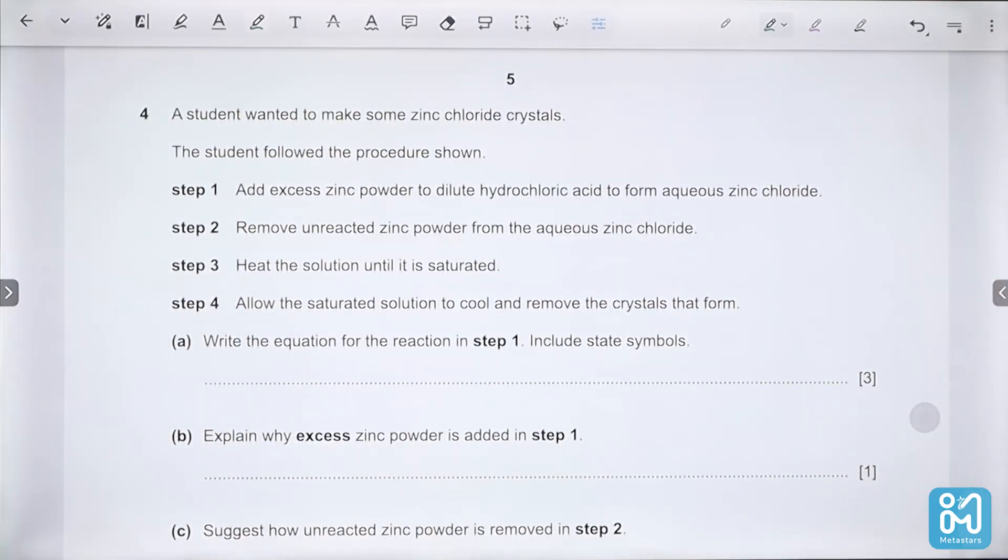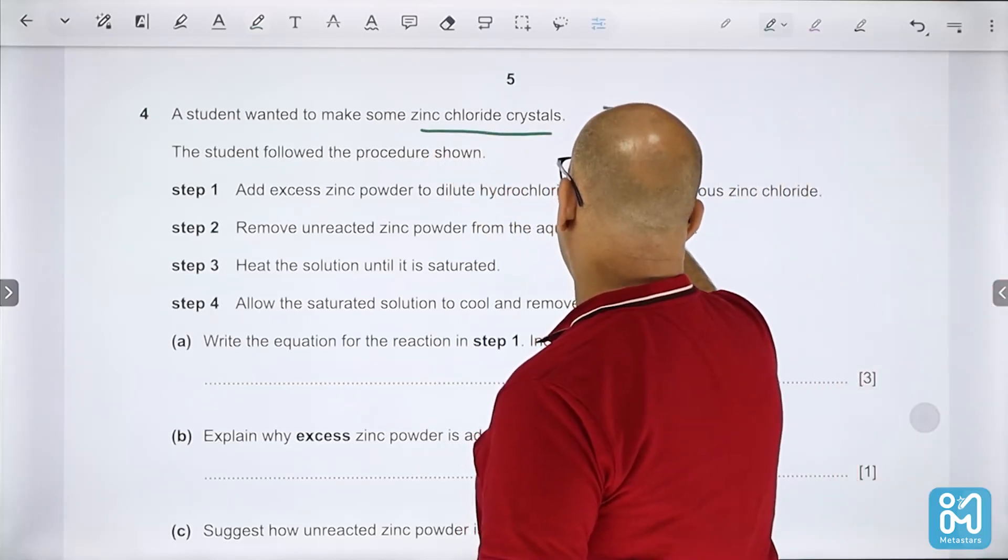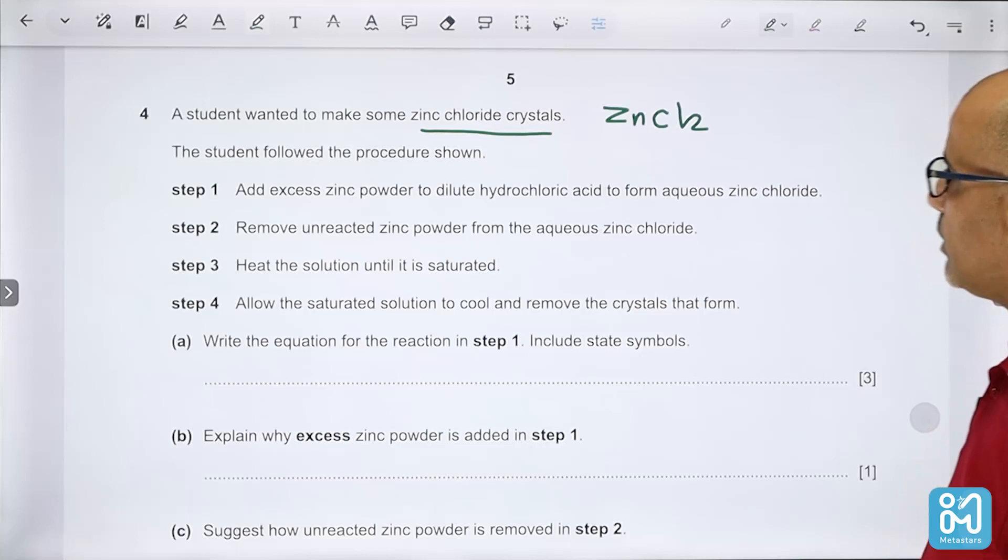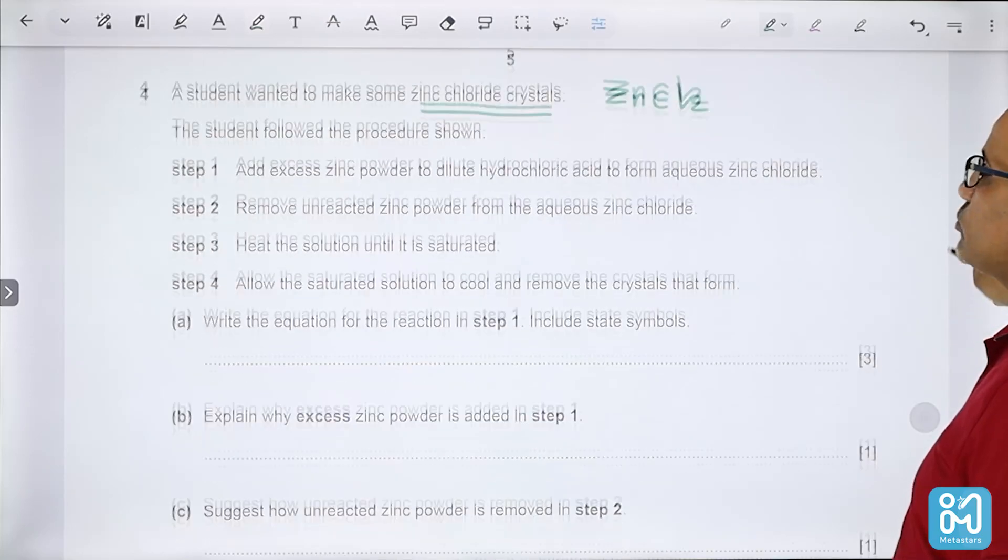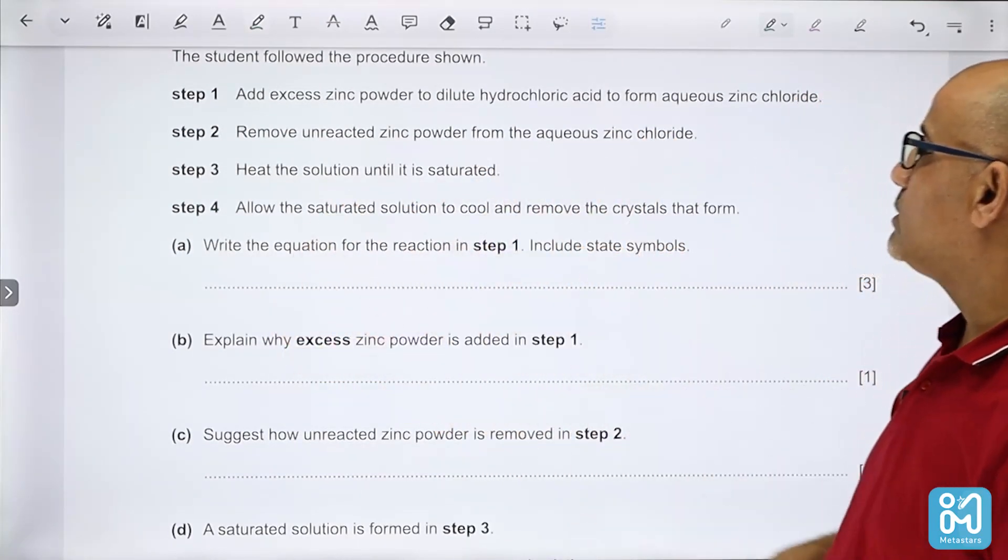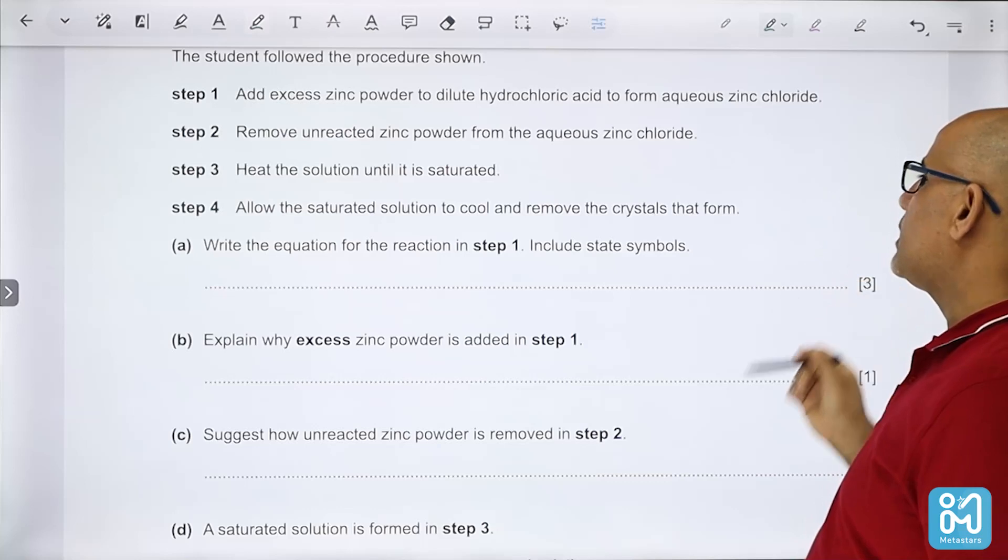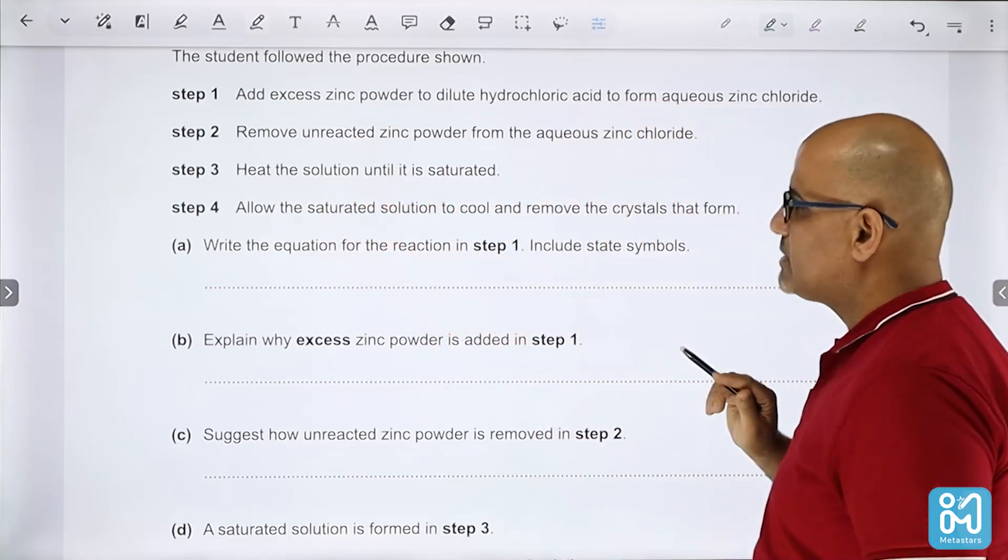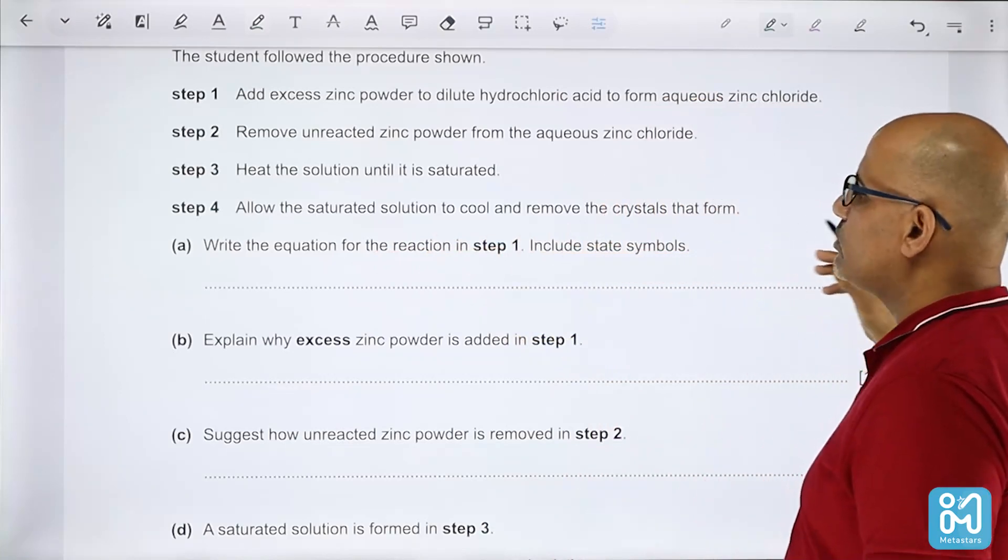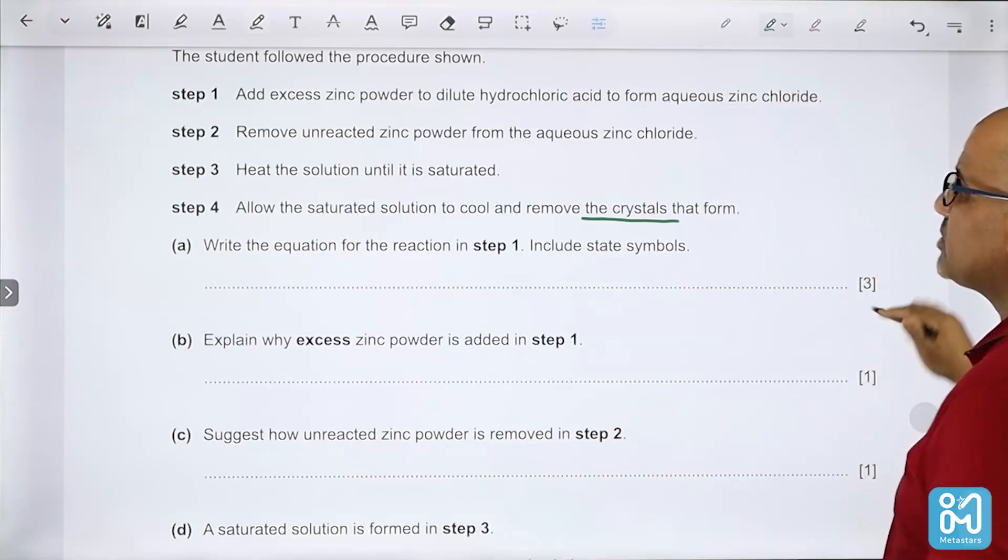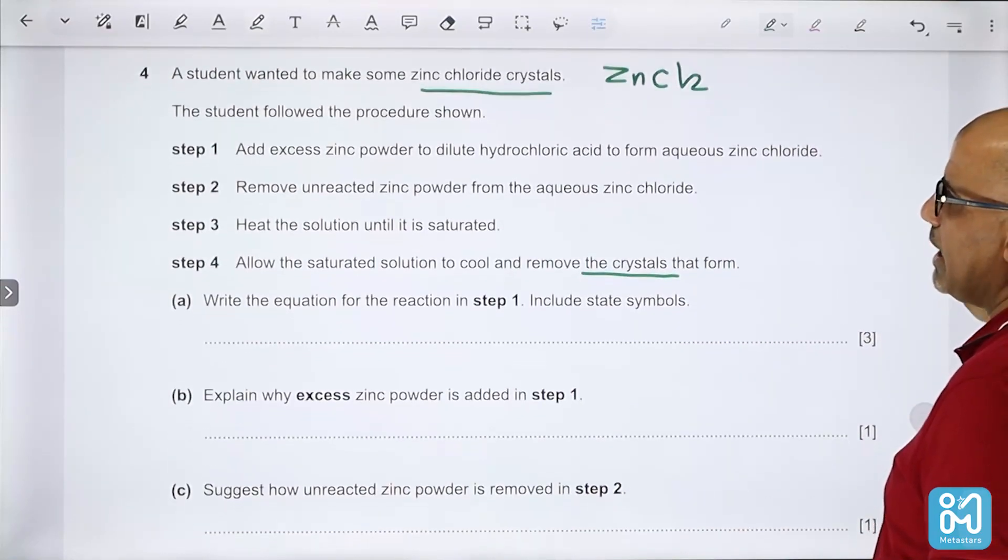Question four: a student wanted to make some zinc chloride crystals, ZnCl2. The student follows the procedure shown. Step one: add excess zinc powder to dilute hydrochloric acid. Remove the unreacted zinc powder from the aqueous zinc chloride. Heat the solution until it is saturated. Allow the saturated solution to cool and remove the crystals. That's the crystallization process.